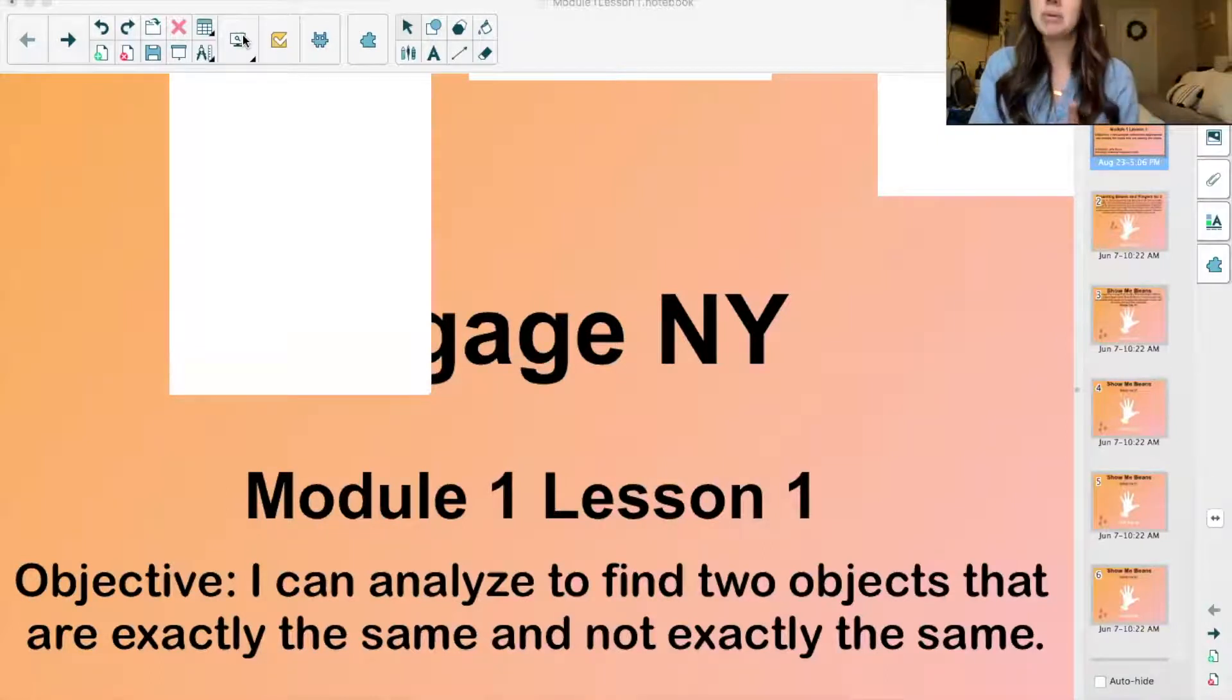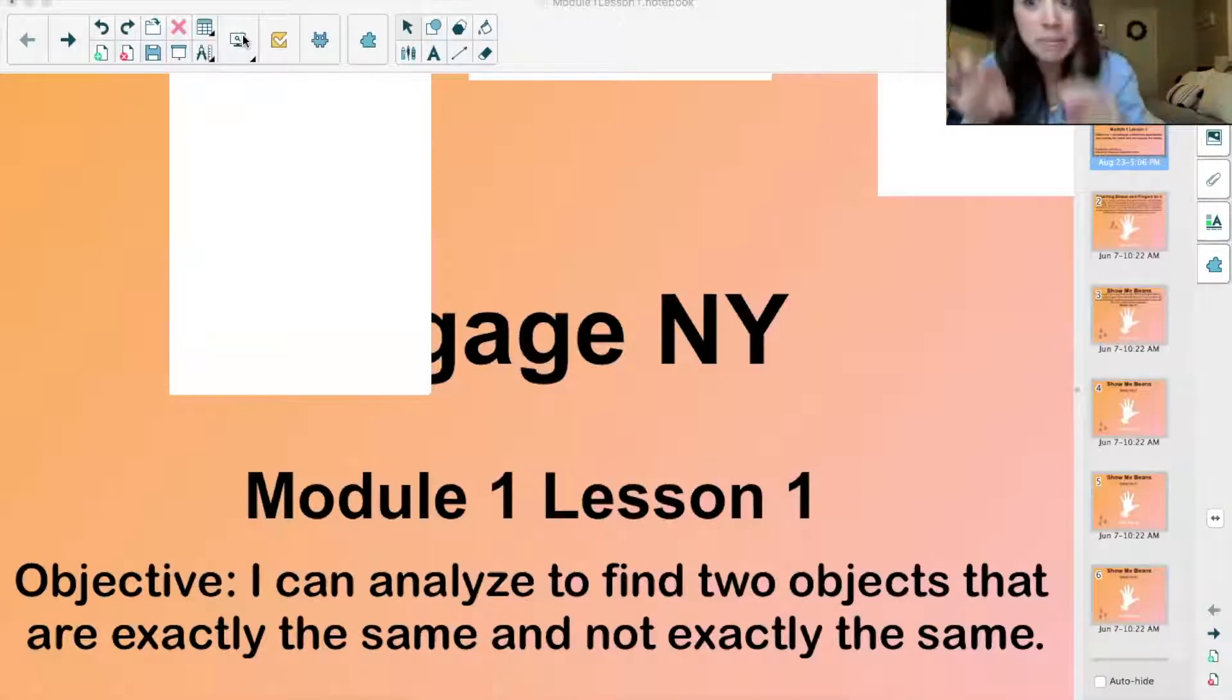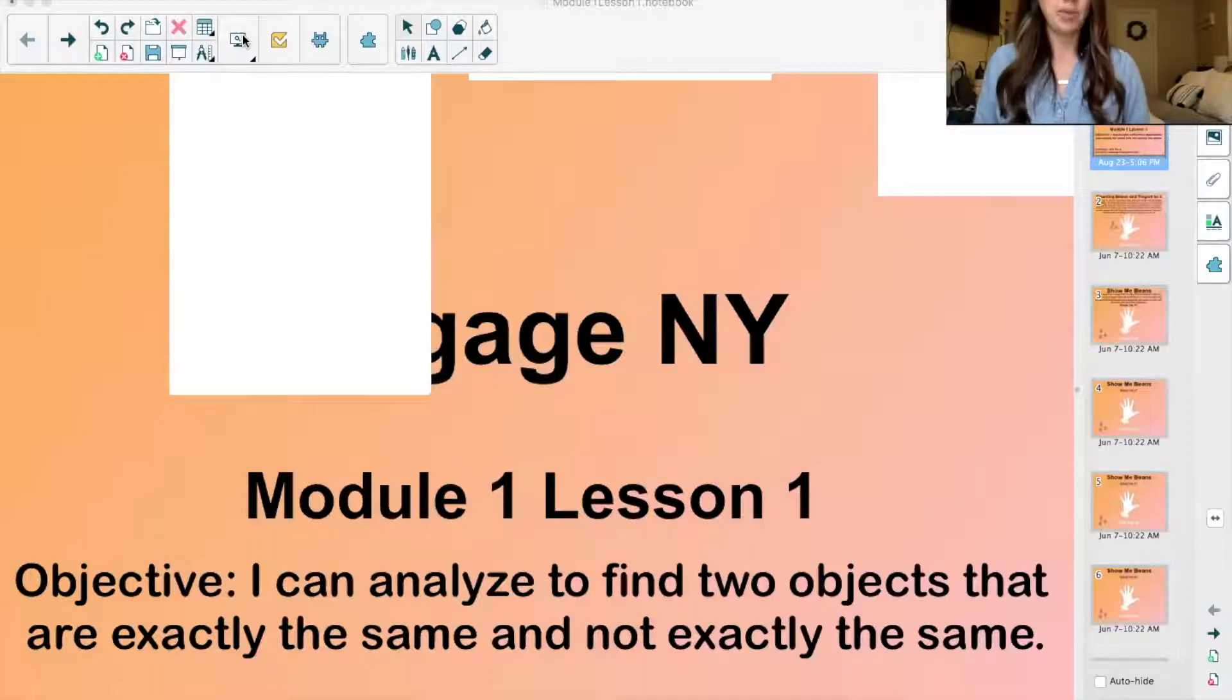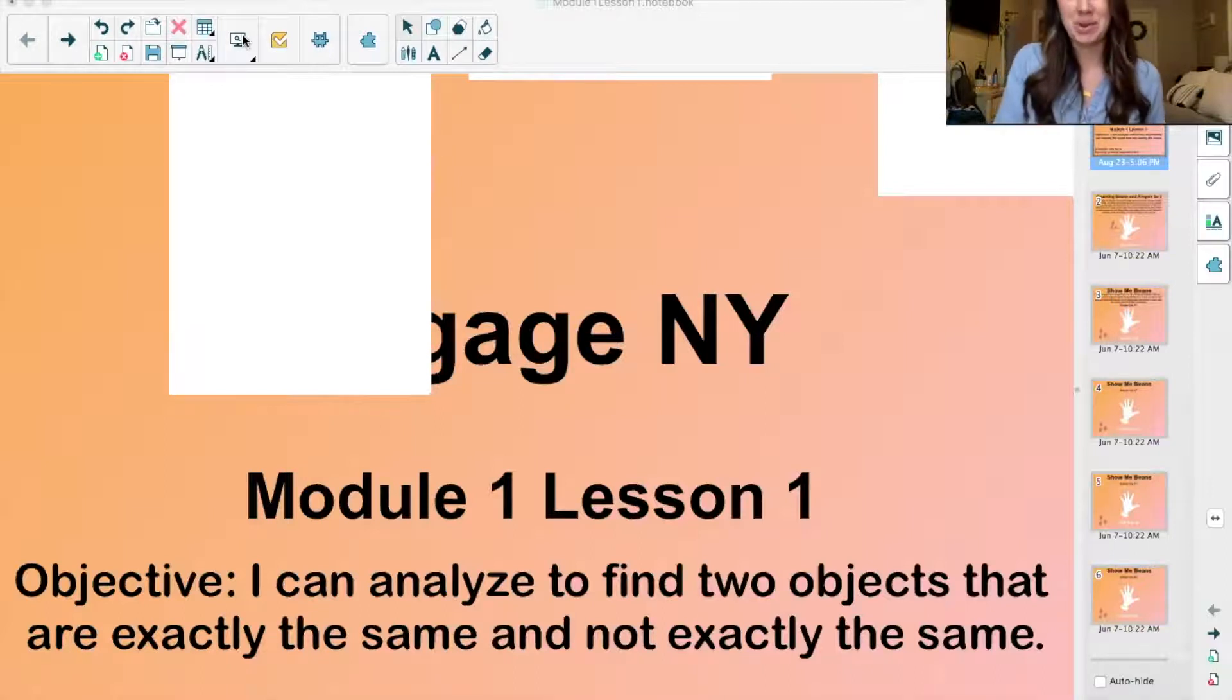And our goal today will be to analyze, to find, and analyze just means like observe, be detectives, to find two objects that are exactly the same and two objects that are not exactly the same. So two that are the same and two that are not the same. That will be our goal for the day. But first, like I said, we'll start off with that fluency and the application problem, and then we'll get into this main part of our lesson. All right, you ready? So get out your counting tools. Here we go.